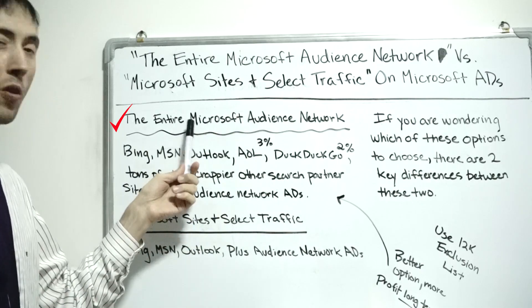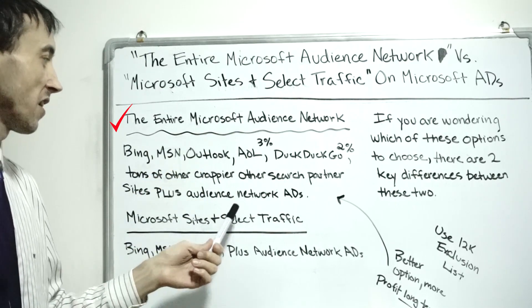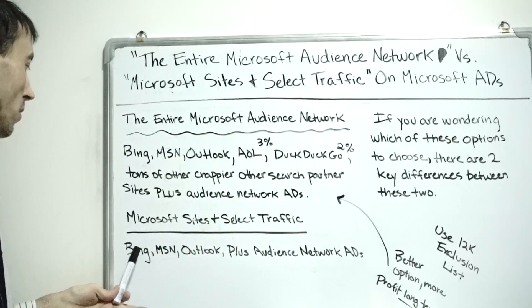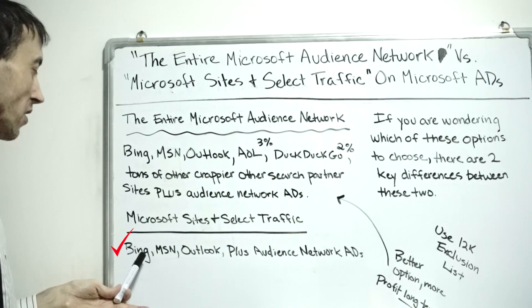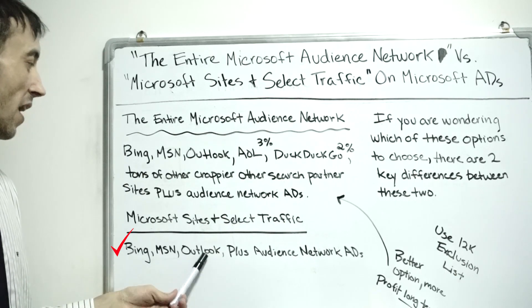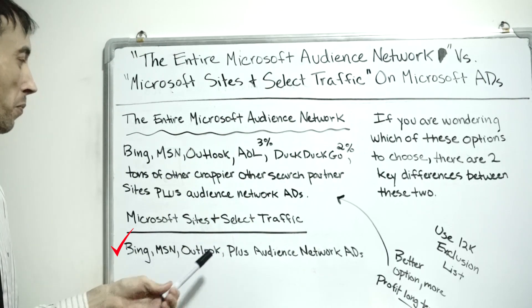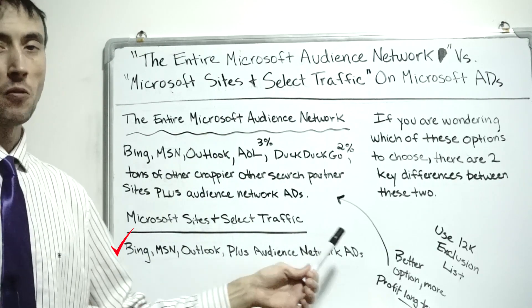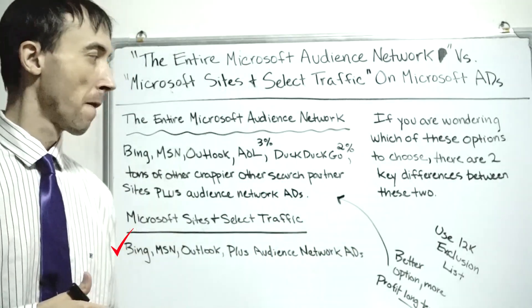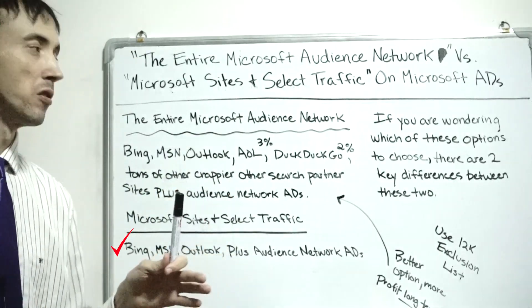Your other option is Microsoft Sites and Select Traffic. The main difference is you're going to show up on Bing, MSN, and Outlook — all Microsoft properties — plus the audience network display ads that show up across the web. Most people are going to tell you to go with this one because there are a lot of sites on the broader network that don't work.